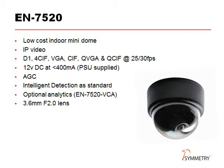The EN 7520 is an IP device only, so there is no analog output. The resolutions are the same as the EN 7510, but as this device uses a CMOS sensor, D1 and 4SIF are upscaled images from its native VGA. A power supply is provided, as this camera is not compatible with PoE, to keep it cost competitive. Once again, intelligent detection is standard, with analytics available on the VCA version.